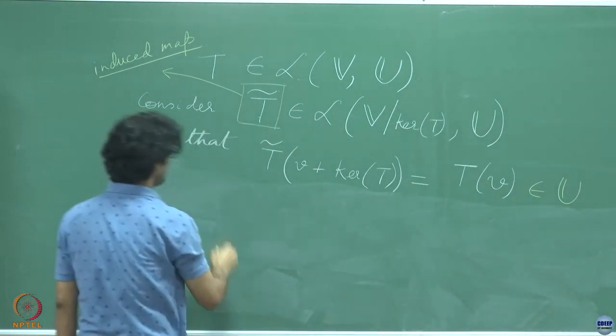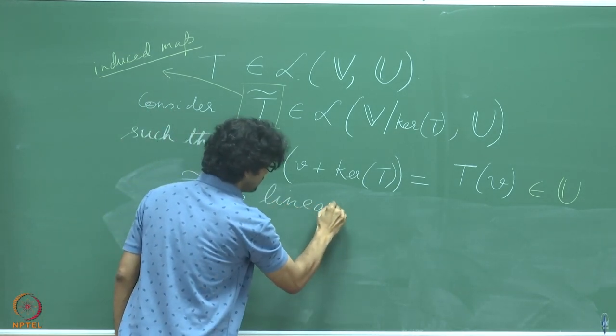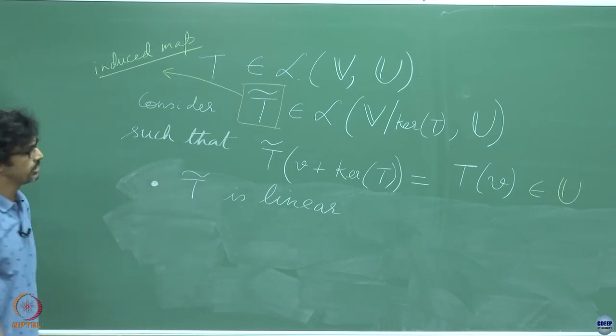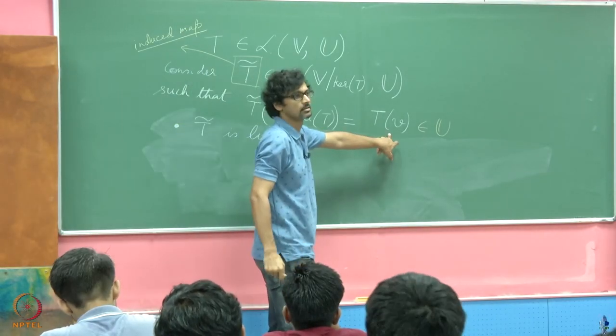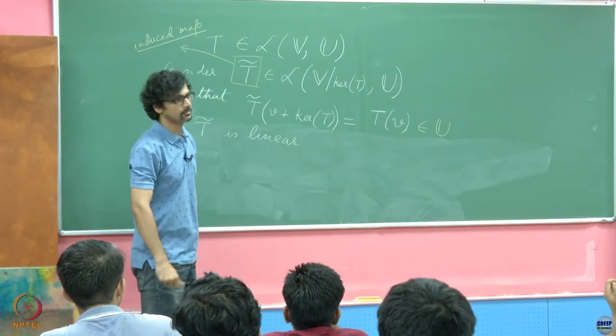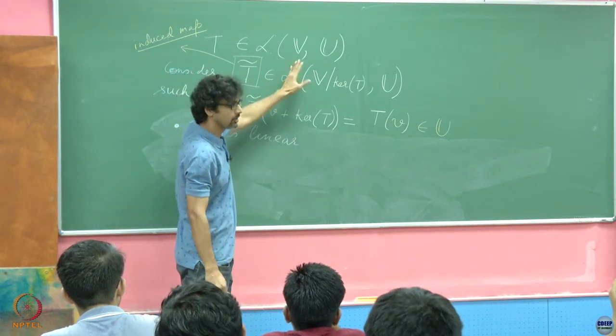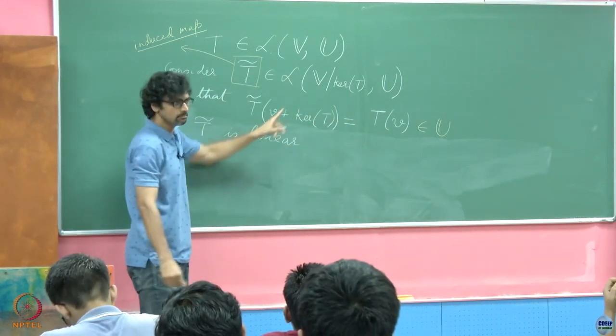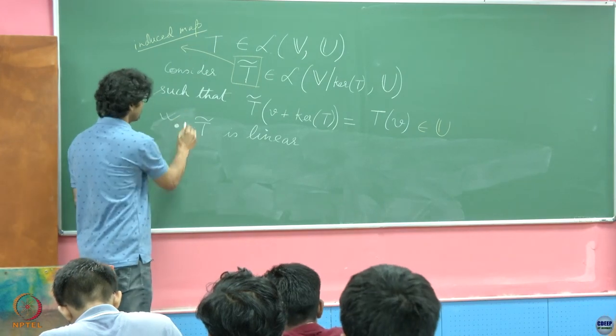The next claim is that T tilde is linear. Is that obvious? Do we really need to prove this? Yeah, it is defined like this and T is known to be linear. Of course, you might say you already use this, but that is okay. It is just a mapping from this to this. But we now are sure that this is also linear by virtue of the way in which we have defined it. So linearity is checked.